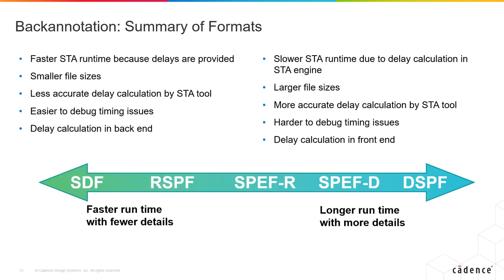Different formats provide different levels of accuracy and runtimes. Some of the larger file sizes come with longer runtimes, so it may take more time to generate those files. When you reduce them and make it simpler, it's faster to read into the tools. Delay calculation happens in either the front end or the back end. You can start with DSPF or SPEF and bring that directly into your synthesis tool to let it do the delay calculation, or you can do the calculation ahead of time and bring in an SDF. You're trying to justify the runtime with the amount of accuracy that you prefer, generating correlation numbers between your front-end and back-end tools even if you have to sacrifice some accuracy to meet your design goals faster.